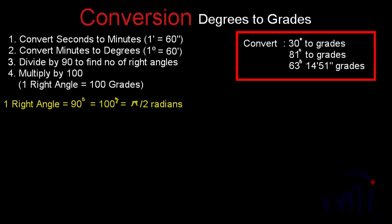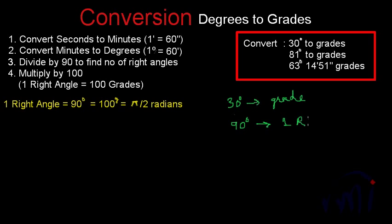We have three problems: convert 30 degrees to grades, 81 degrees to grades, and 63 degrees 14 minutes and 51 seconds to grades. For the first problem, converting 30 degrees to grades: one right angle is 90 degrees, so 30 degrees equals 30/90 right angles. The zeros cancel, giving 1/3 right angles.